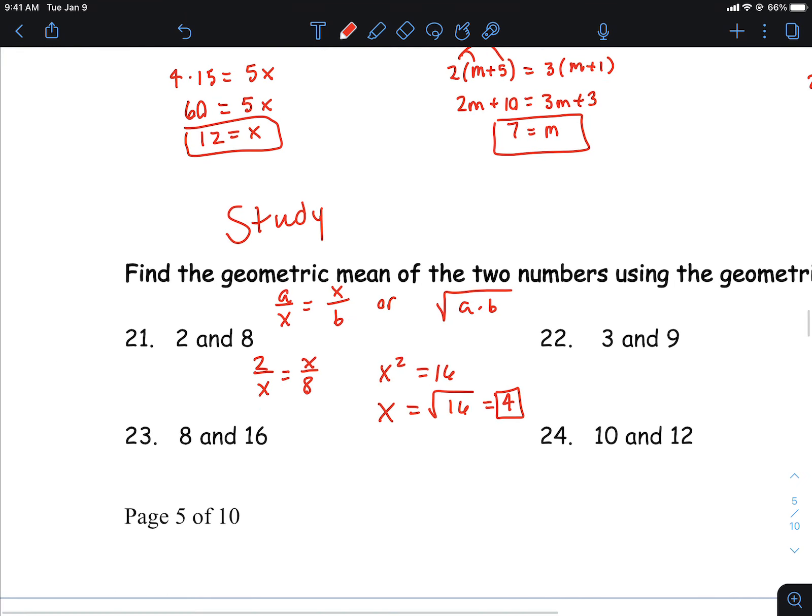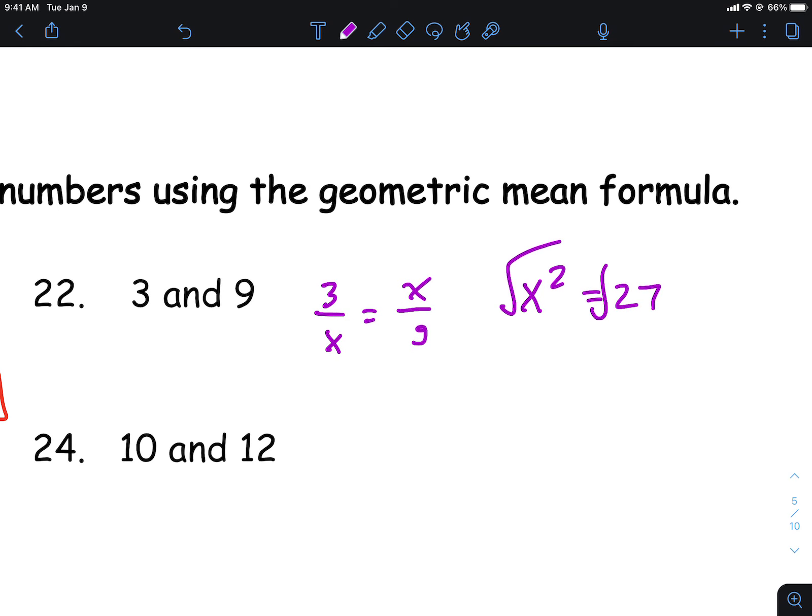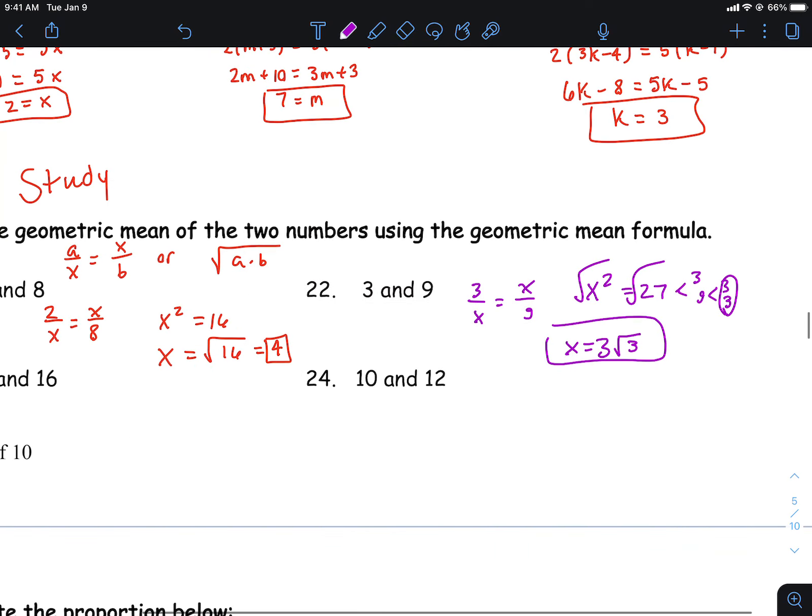Some will come out real nice. Some of them you'll need to do simplest radical form. So let's try out this next one here. You got 3 and 9. So let's go 3 to x and then x to 9. It's going to go to x squared, it's 27. And then you can square root both sides, and then that'll be 3, 9, 3, 3. That'll be it right there. Make sure you pull out pairs out of the radical, and then you'll be set up for success there.